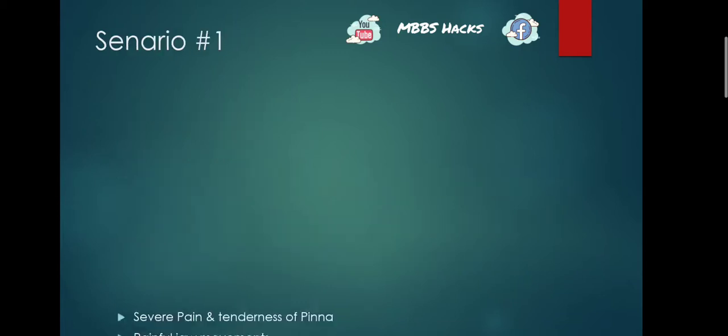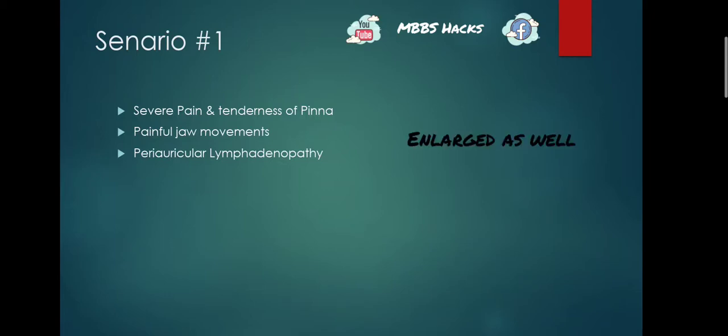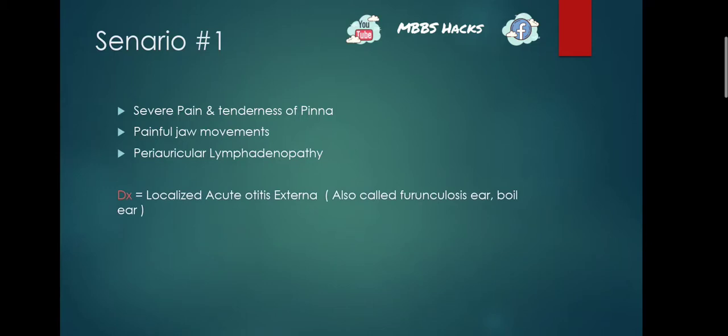Scenario one: there is severe pain and tenderness of the pinna, painful jaw movements, and periauricular lymphadenopathy — the lymph nodes around the ear are painful and tender. The diagnosis is localized acute otitis externa, also called furunculosis of the ear or a boil of the ear.